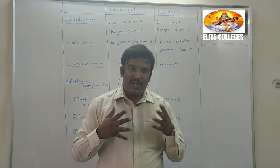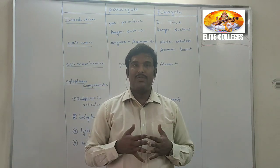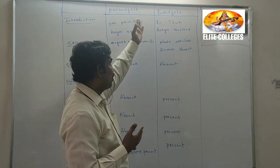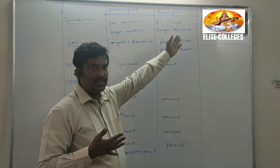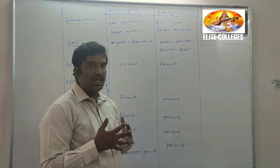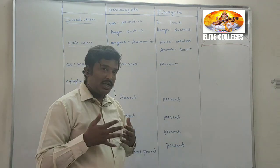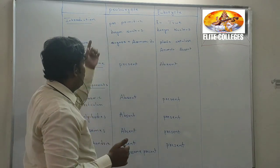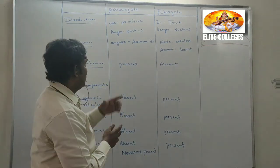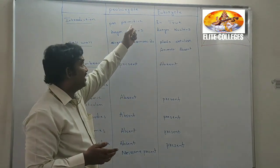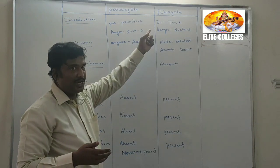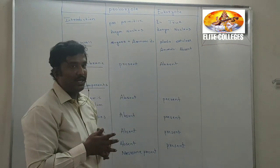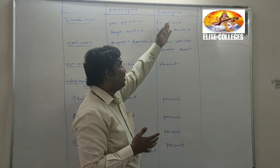Now let us compare the differences between prokaryotes and eukaryotes based upon their cellular components. We will see what cellular components are present in prokaryotes and what are present in eukaryotes. The term 'pro' in prokaryote clearly indicates primitive, and 'karyote' means nucleus. So the cell with a primitive nucleus is known as a prokaryote.